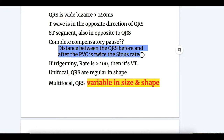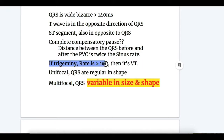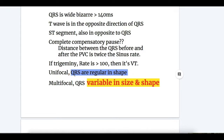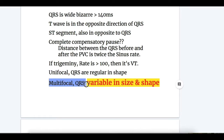If there is trigeminy and the rate is more than 100, then it is ventricular tachycardia, so PVC may also cause wide complex QRS with a fast rate. Regarding the shape of QRS in PVC: if it is unifocal, the QRS is regular in shape; if it is multifocal, the QRS is variable in size and shape.